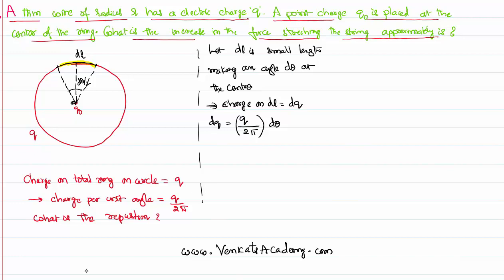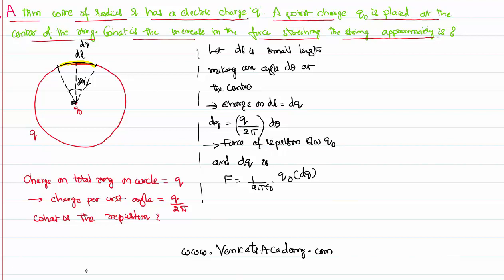The charge dq on that element dL is: since the total charge for total angle 2π is Q by 2π, for small angle dθ, dq equals (Q/2π)·dθ. Now between Q0 and dq there is a repulsion. The force of repulsion between Q0 at the center and dq on the small element, as per Coulomb's inverse square law, is dF = (1/4πε0)·(Q0·dq)/R².